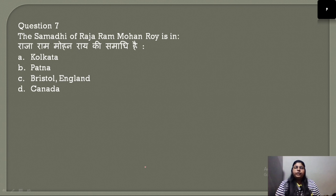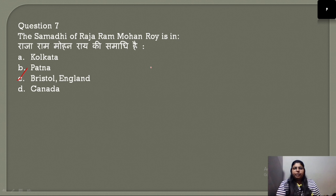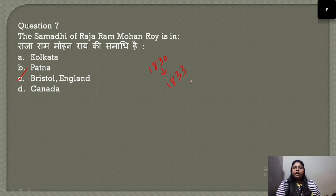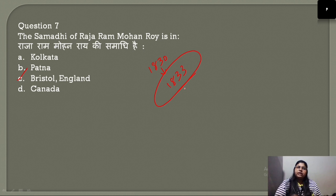The Samadhi of Raja Ram Mohan Roy is in Bristol, England. In 1830, Akbar II sent Raja Ram Mohan Roy as his envoy to meet King George IV. In 1833, Raja Ram Mohan Roy passed away and his Samadhi is in Bristol, England.